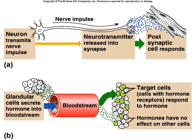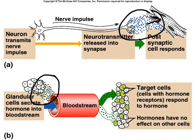You see an axon with a nerve impulse traveling down it. At the end of the axon, you see these blue dots, which are your neurotransmitters, being released into the synapse. The neurotransmitter then binds to a receptor on the cardiac muscle and has an effect on it. The second example shows an endocrine gland releasing a hormone — represented by green dots — into the bloodstream, which then gets carried to the target cell and has an effect on it.